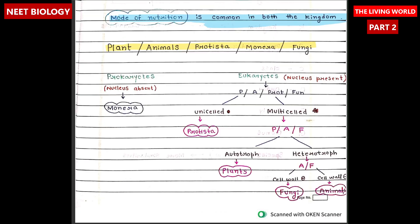Now let's study about prokaryotes and eukaryotes. Prokaryotes and eukaryotes are the two fundamental types of cells, distinguished primarily by the presence or absence of a nucleus or other membrane-bound organelles. In prokaryotes, nucleus is absent, and in eukaryotes, nucleus is present. Monera is a prokaryote, and Plantae, Animalia, Protista, and Fungi are eukaryotes.